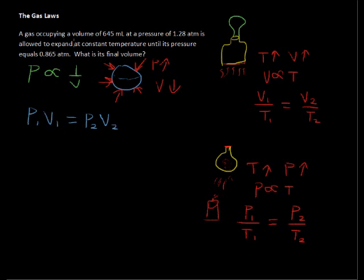Okay, so let's plug in what we have here. We have an initial volume and an initial pressure. So pressure is initially 1.28 atmospheres. Let me read that out to you. That is, a gas occupying a volume of 645 milliliters at a pressure of 1.28 atmospheres is allowed to expand at constant temperature until its pressure equals 0.865 atmospheres. What is its final volume?